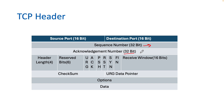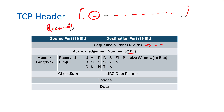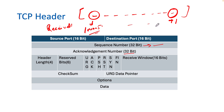The acknowledgement number field is 32 bits. It is sent by the receiver to confirm receipt of a segment. It contains the address of the last byte in the received data field plus one. So if the sequence number was 10,005 and the last byte was 10,009, the acknowledgement number sent back will be 10,010, stored in binary format in this 32-bit field.